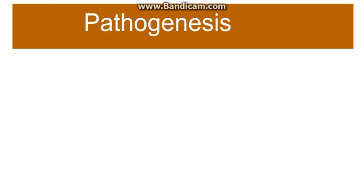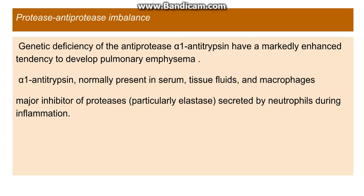In the pathogenesis, we first discuss the protease-antiprotease imbalance. Alpha-1 antitrypsin is an anti-protease and a major inhibitor of proteases like elastase, which is secreted by neutrophils during inflammation. It inhibits elastase and thereby protects normal elastic tissue from damage. In patients with genetic deficiency of alpha-1 antitrypsin, there is an increased chance of developing emphysema.